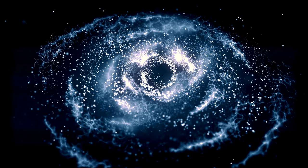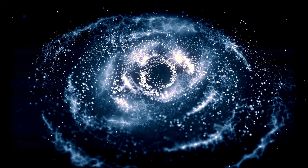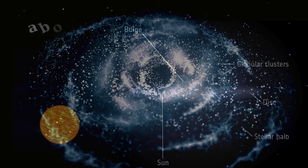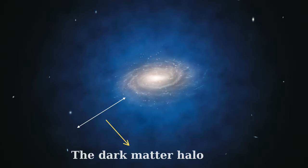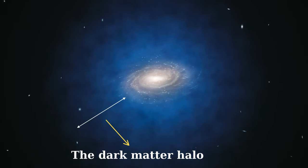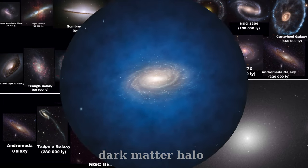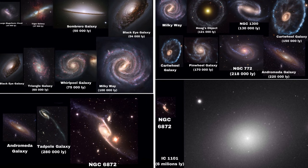The total mass of the Milky Way, including its dark matter halo, is estimated to be about 1.5 trillion times the mass of our Sun. The dark matter halo extends much farther than the luminous part of the galaxy, dominating the total mass. These dimensions make the Milky Way an average-sized barred spiral galaxy.